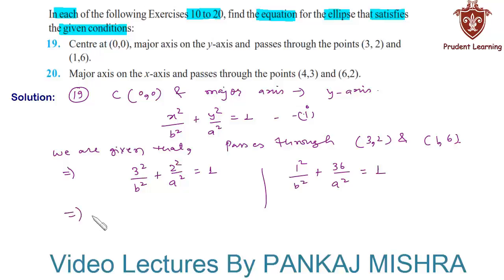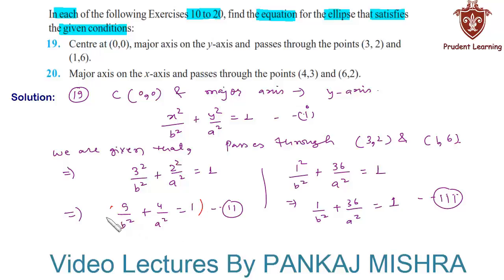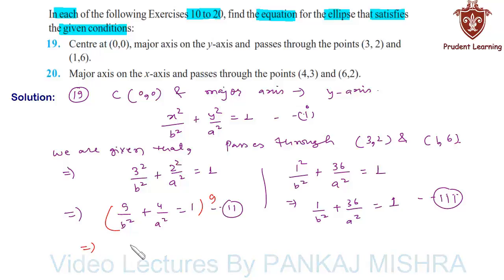This can be written as 9 over b² plus 4 over a² equals 1 — call it equation 2. And 1 over b² plus 36 over a² equals 1 — call it equation 3. Now we have to solve these two equations simultaneously to get the values of a² and b². We multiply equation 2 throughout by 9, giving 81 over b² plus 36 over a² equals 9 — call it equation 4.